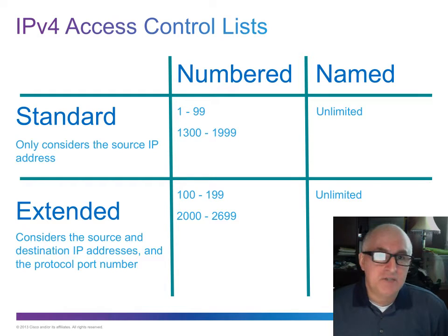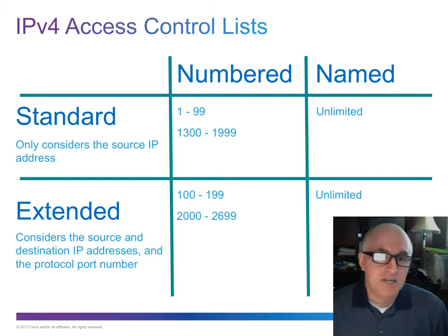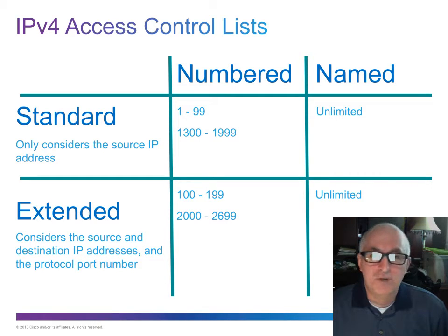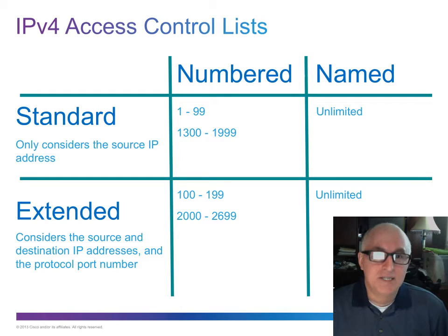Standard and extended ACLs come in two different versions. You can have a numbered standard ACL — if it is numbered 1 through 99, it's a standard ACL. They also added extended numbers for IPv4 standard ACLs: 1300 through 1999. If you number your access list in the extended ranges of 100 through 199 or 2000 through 2699, it will be considered an extended ACL.